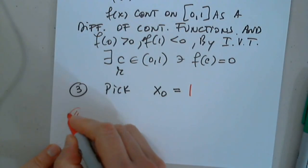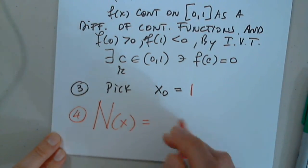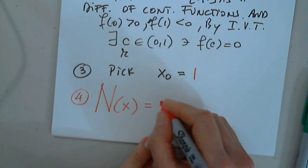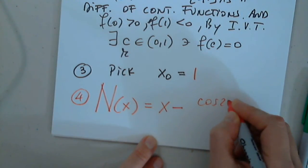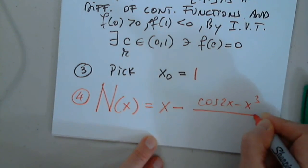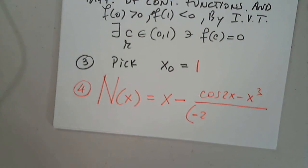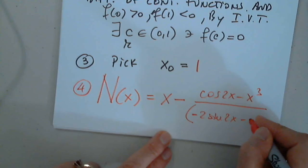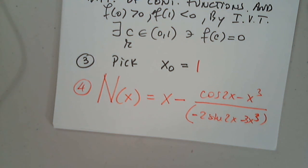In step 4, I will create a function that I like to call Newton's method, or Newton's function, N of x. Which will be x minus f of x, cosine 2x minus x cubed, divided by the derivative, in parentheses, negative 2 sine 2x minus 3x squared. This is the function we enter now in the calculator.